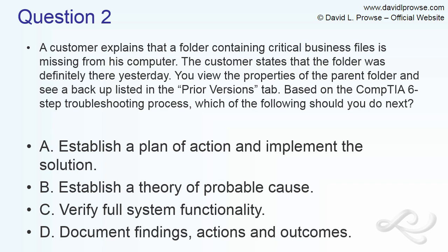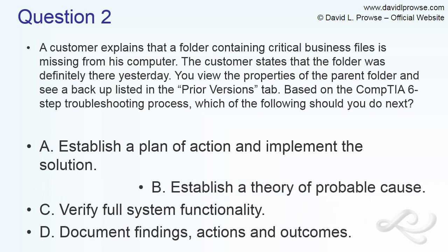We've already identified the problem: critical business files are missing, the folder was there yesterday but isn't today. So step one is done. The next step in the troubleshooting theory is to establish a theory of probable cause — why did it happen? Was the folder deleted, removed, was it a virus, a backup or system restore issue? We don't know exactly. The question wants you to know what to do next based on the six-step process, and that's establishing a theory of probable cause.